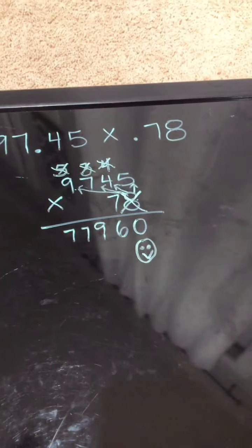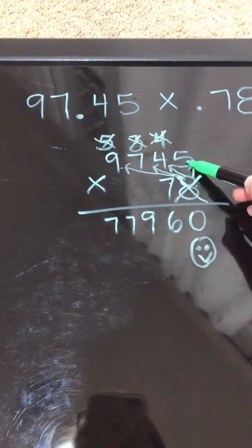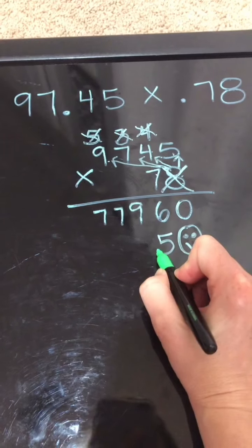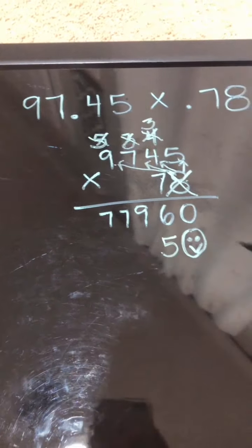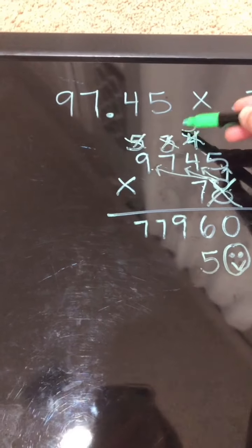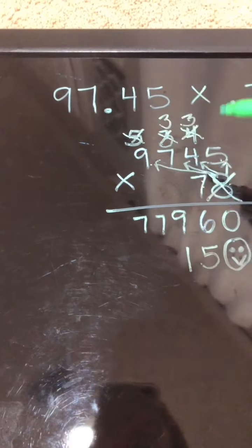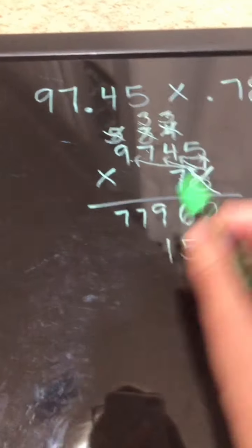Now I'm going to move to the other side. 7 times 5 gives me 35. I'm going to drop my 5 and carry my 3. 7 times 4 is 28, 29, 30, 31. 7 times 7 is 49, 50, 51, 52.